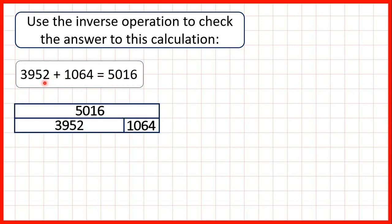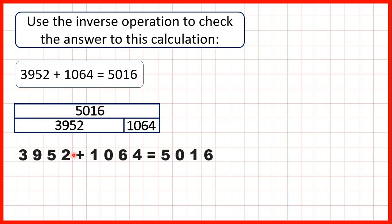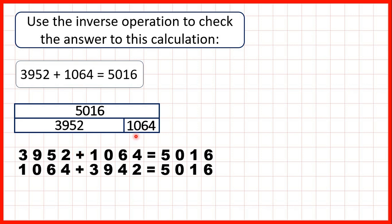We can represent this calculation with a bar model, with the numbers we're adding below and the total on top. This bar model shows us the calculation we're given, but also shows us that 1064 plus 3952 should also equal 5016, because with addition, order doesn't matter — you can add numbers in a different order and still get the same answer. But this bar model can also give us some subtraction facts.